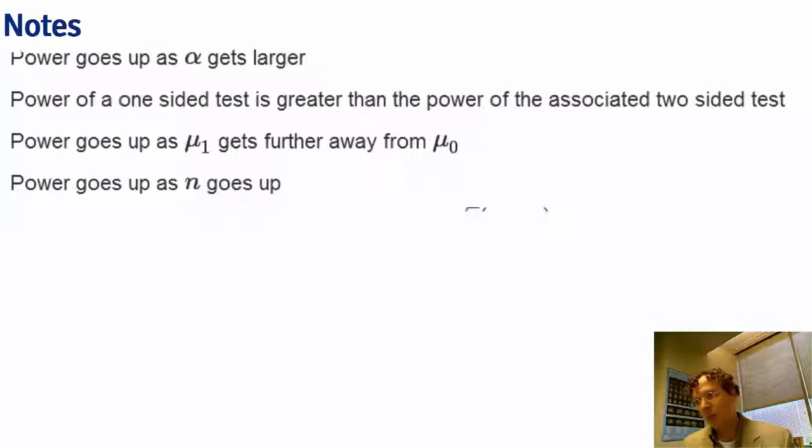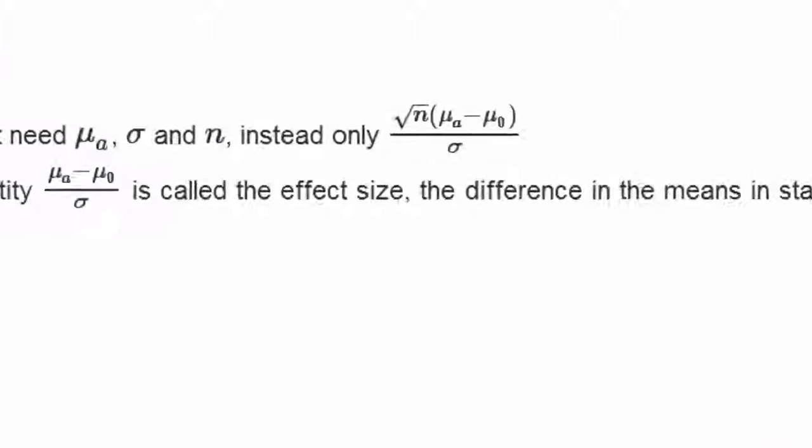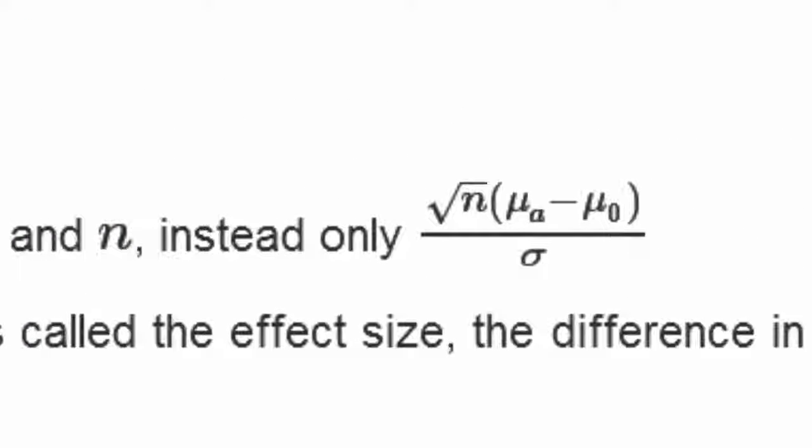Now here's an interesting fact. Power usually doesn't depend on all of these separate parameters, but on some function of those parameters. And in this particular case, that function is one-dimensional. So you really only need to know one number to calculate power. And it's basically the difference between the null and alternative means divided by the standard error. And power only depends on those things, or if you have power in this number, then you can calculate n.